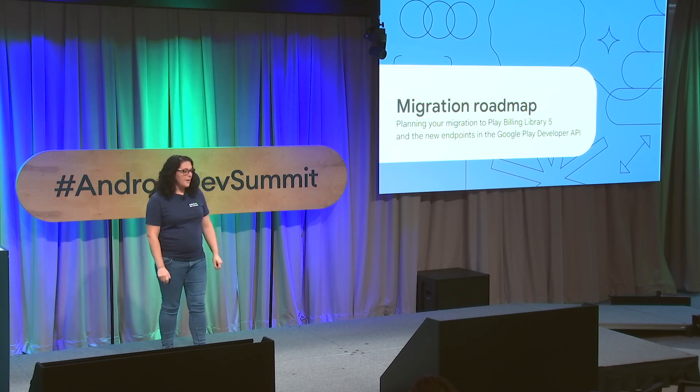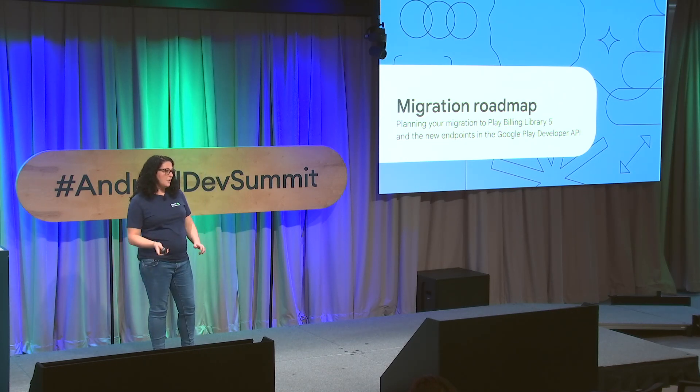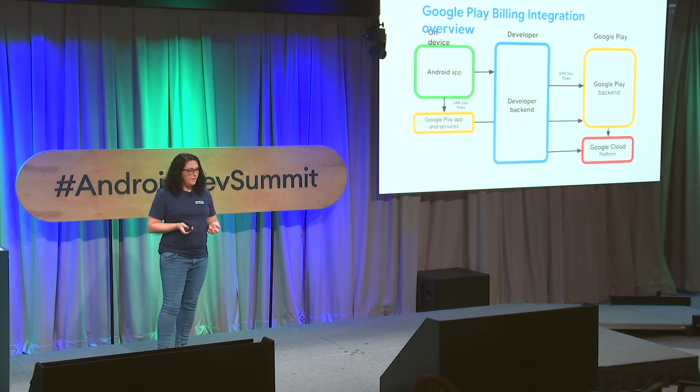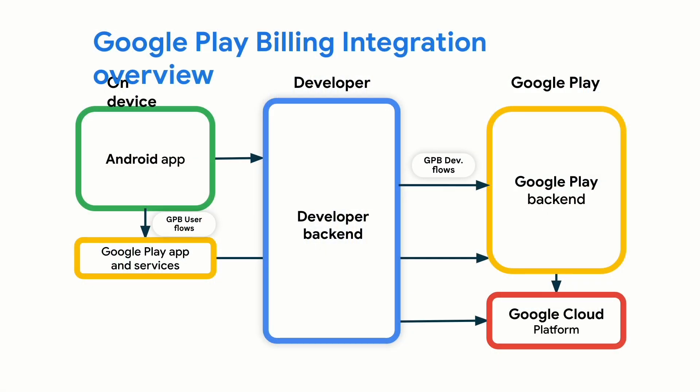Now that we've seen the new features and the state of your subscriptions catalog after conversion, we'll discuss how to gradually move to the new model. Google Play Billing integrations communicate with the Play backend via the Play Billing Library from the Android app, and the Google Play Developer API from the developer backend. This developer backend component is essential to manage subscription entitlements correctly and efficiently, and for this migration, you'll likely have to modify both.